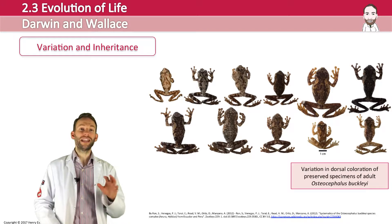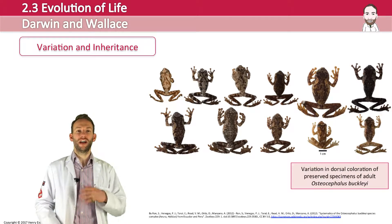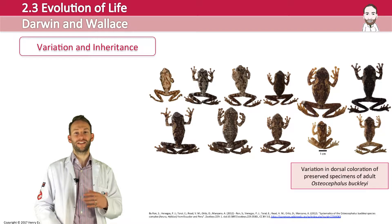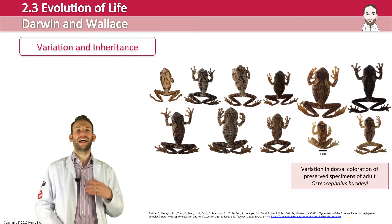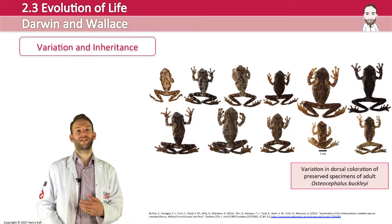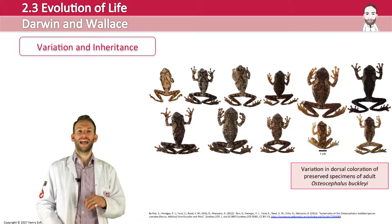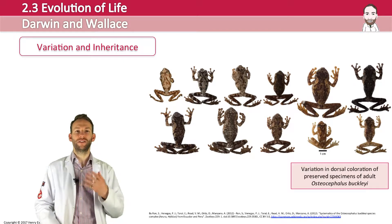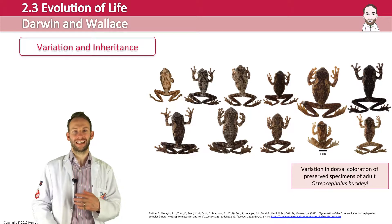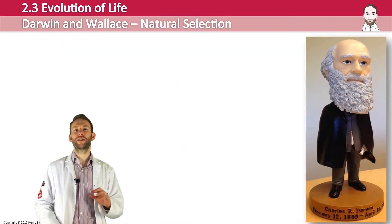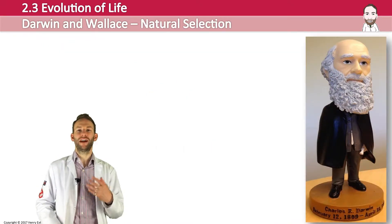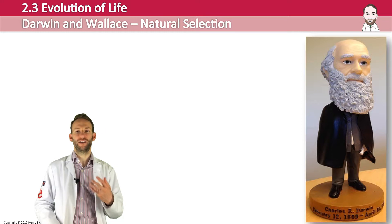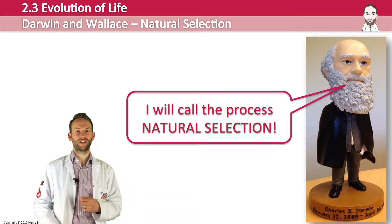When they put all these ideas together — Darwin over many years of reflection on his travels, and Wallace during a malarial fever — they assembled the pieces of the puzzle and came up with the idea of the process of natural selection, which is what causes evolution.